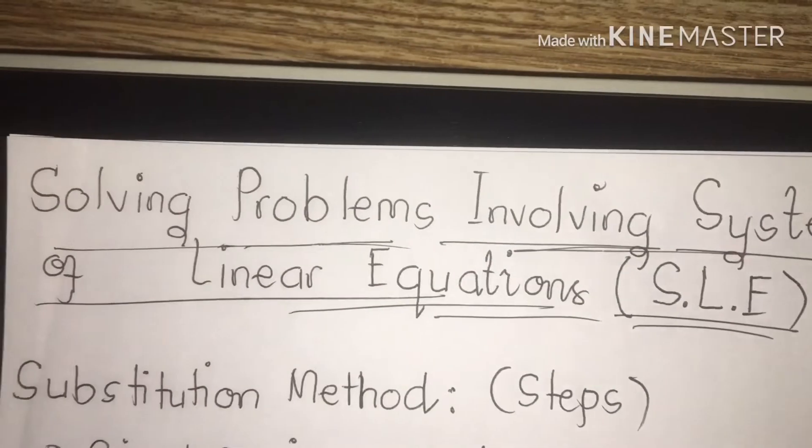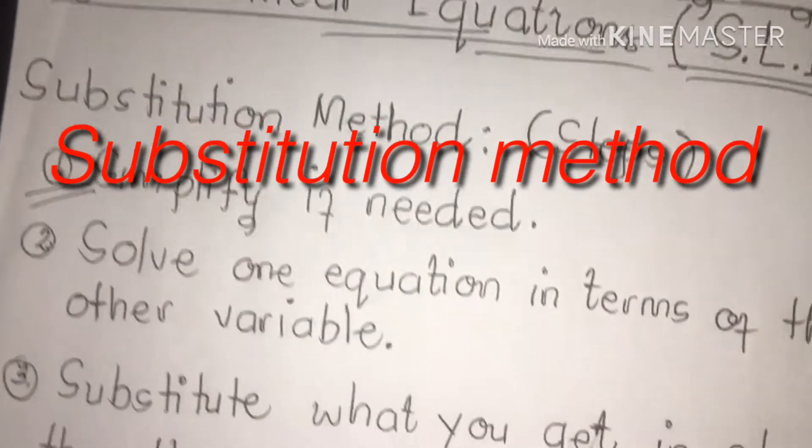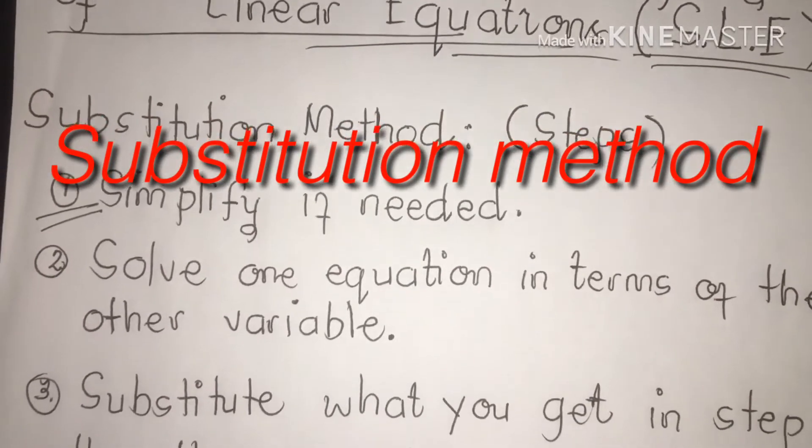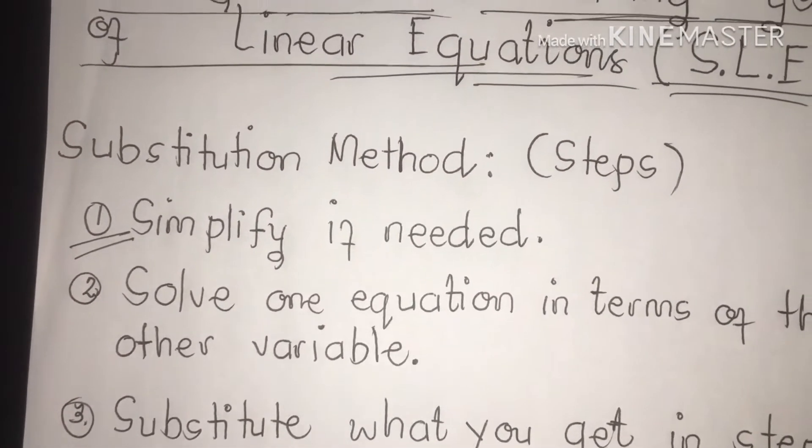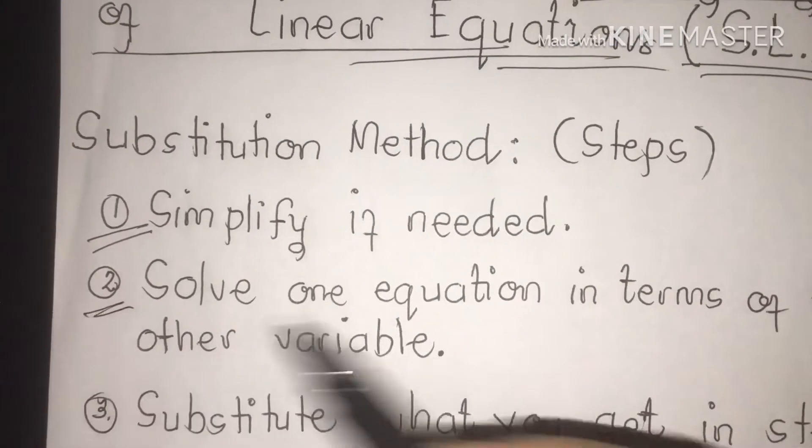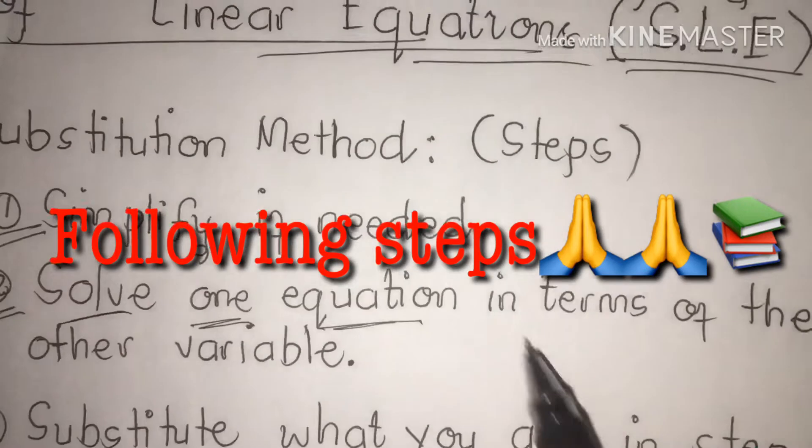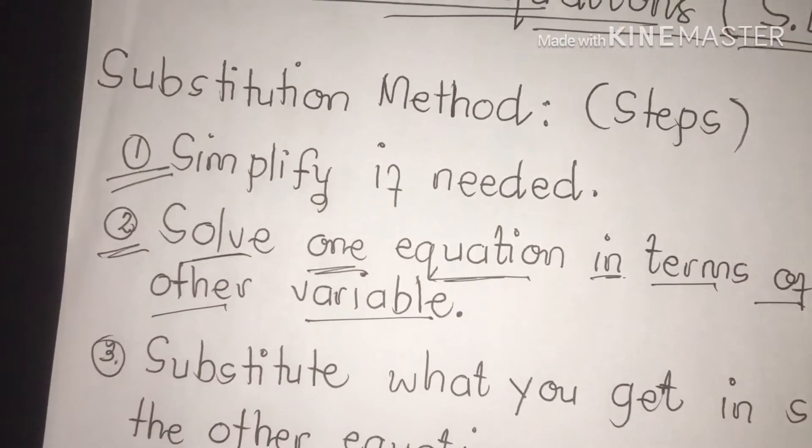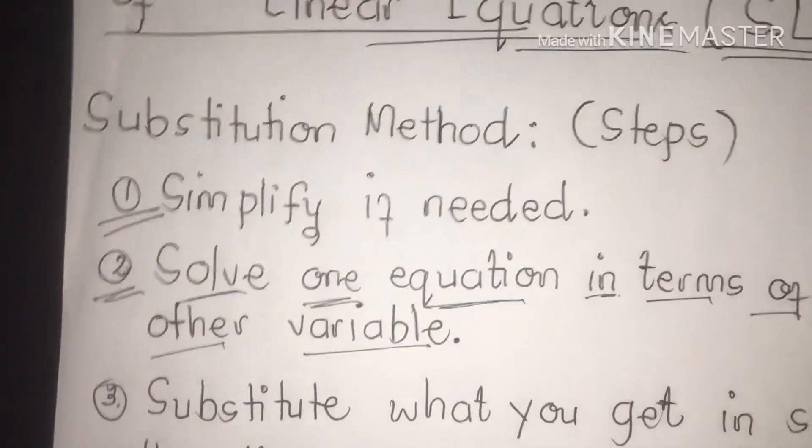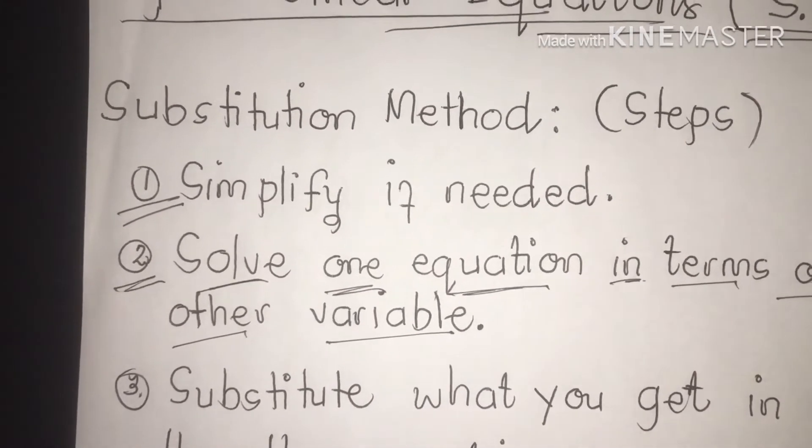And what are those steps? First, simplify if needed. So you are going to simplify if needed. Number two, you are going to solve one equation first in terms of the other variables. For example, variable class, for example, letters x, y, z, different values.